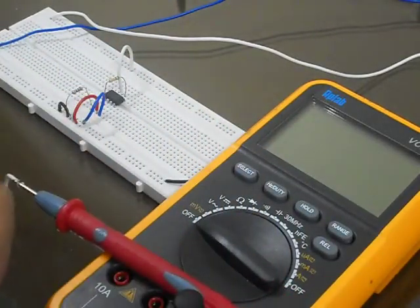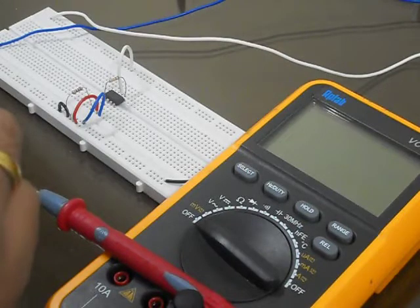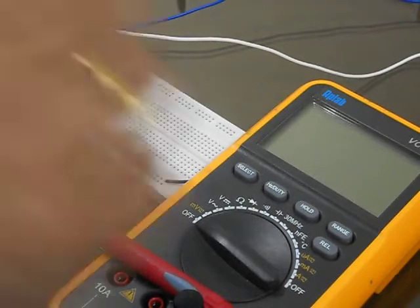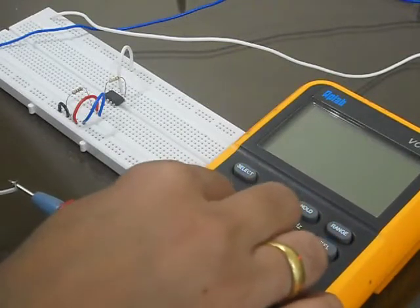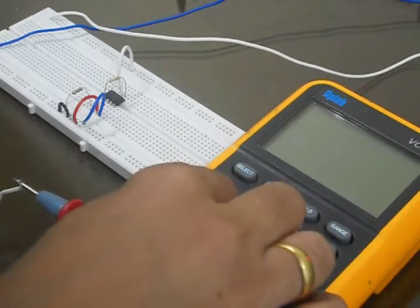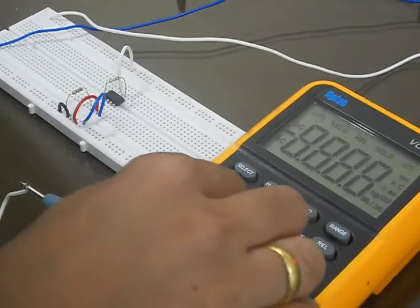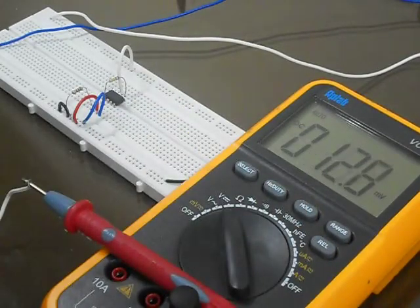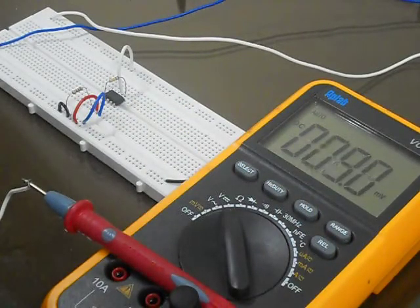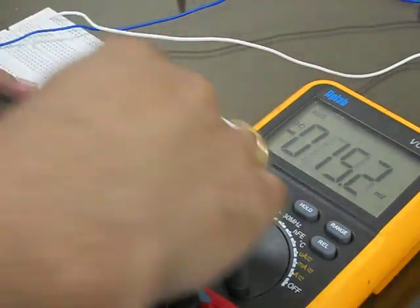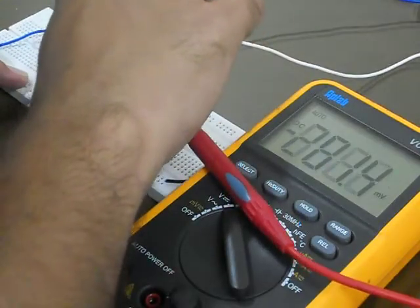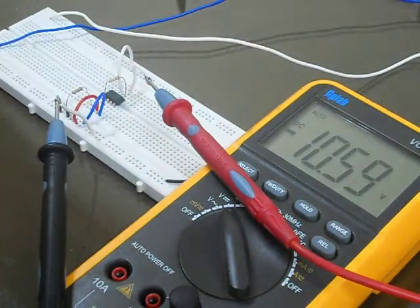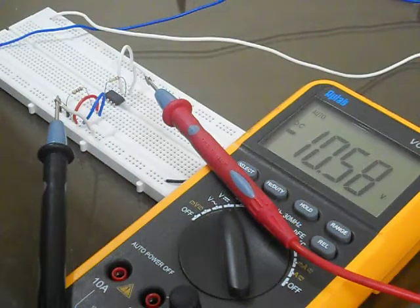We'll divide it by the gain and we'll get the input offset voltage. So for that, let me put the multimeter in DC voltage mode and then measure the output at pin number 6.